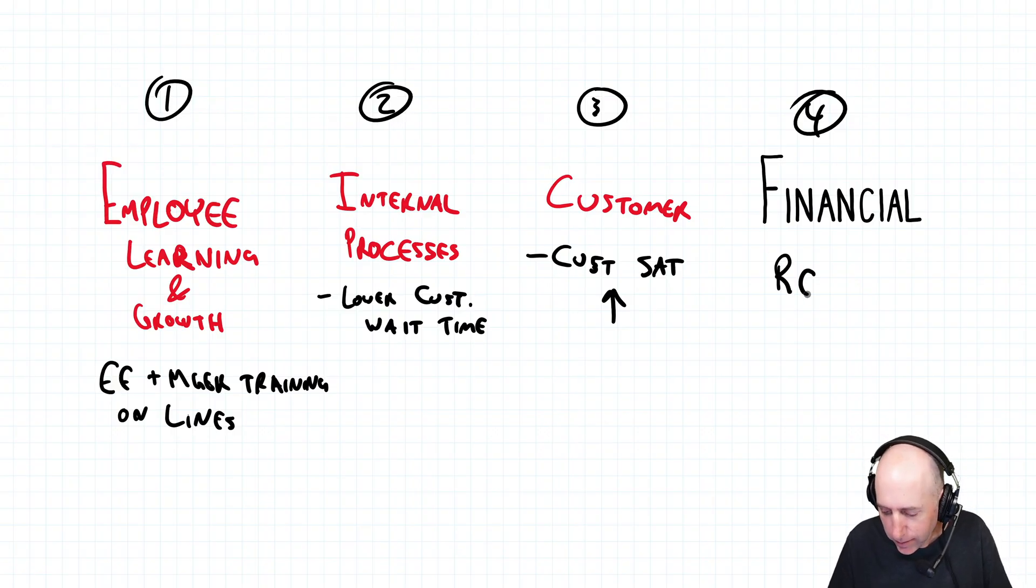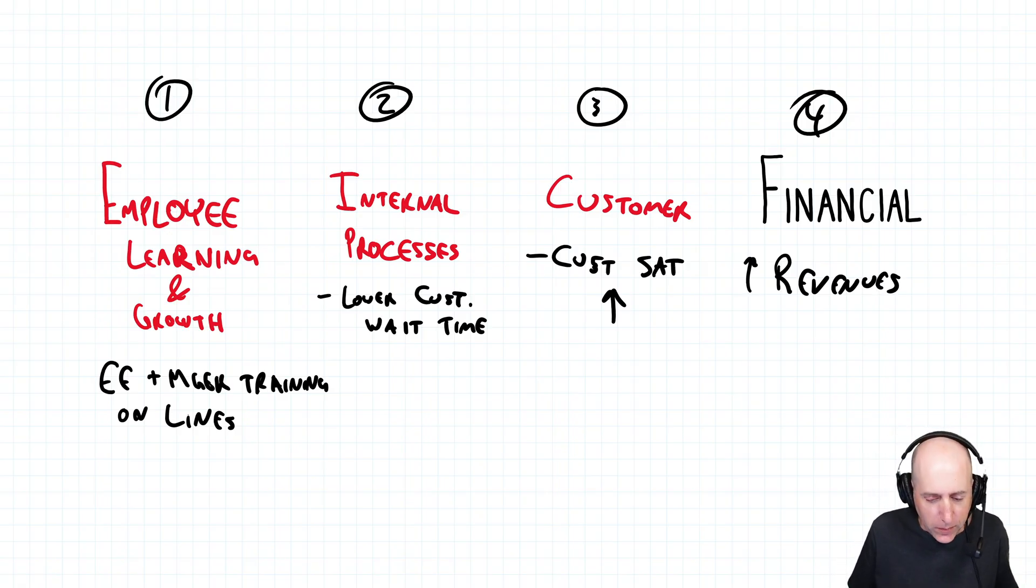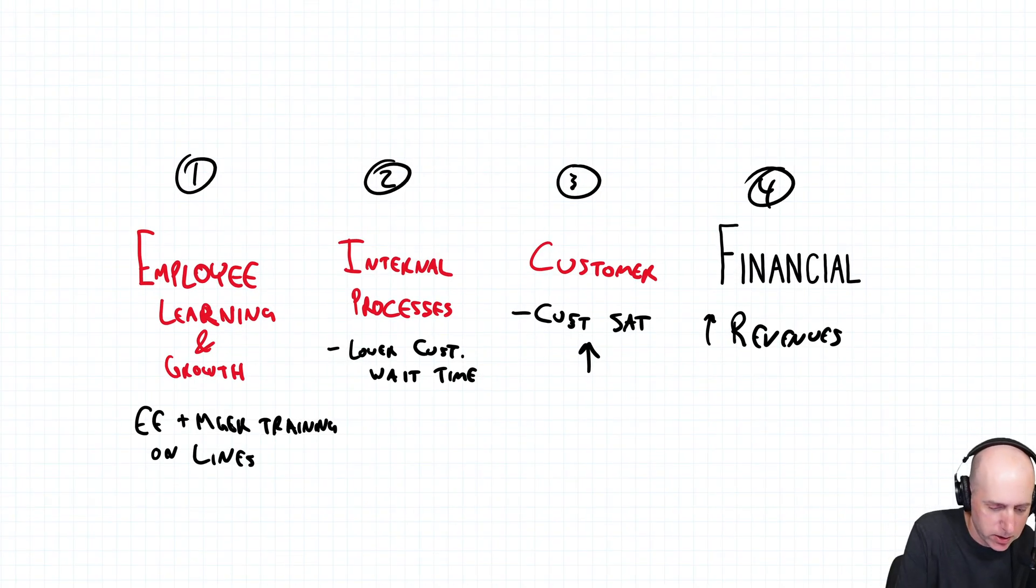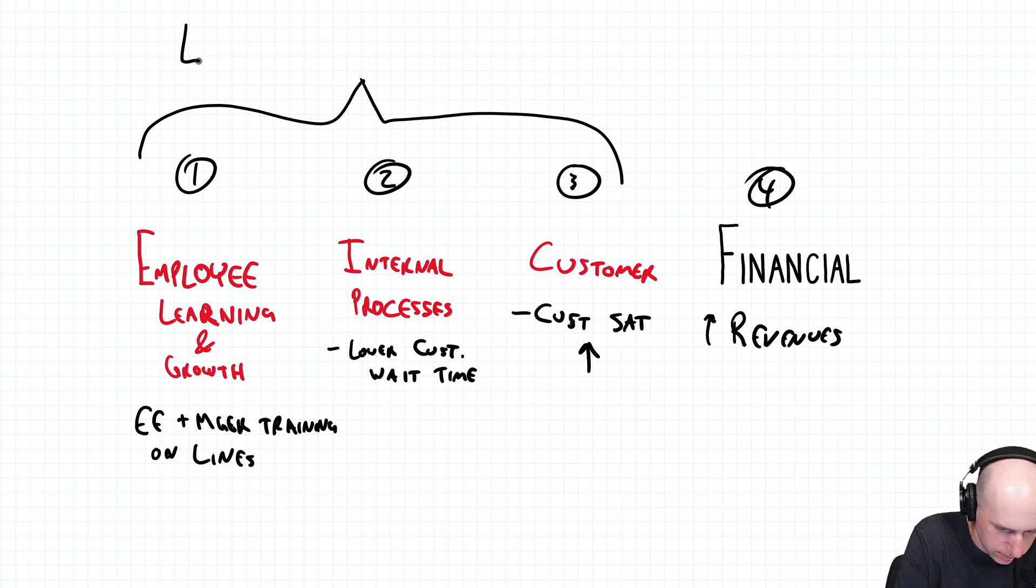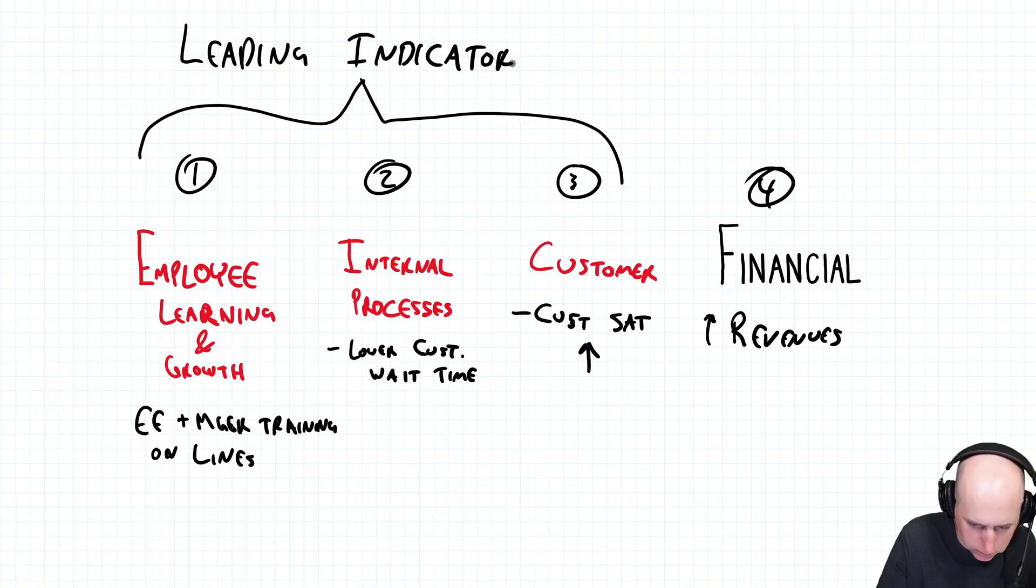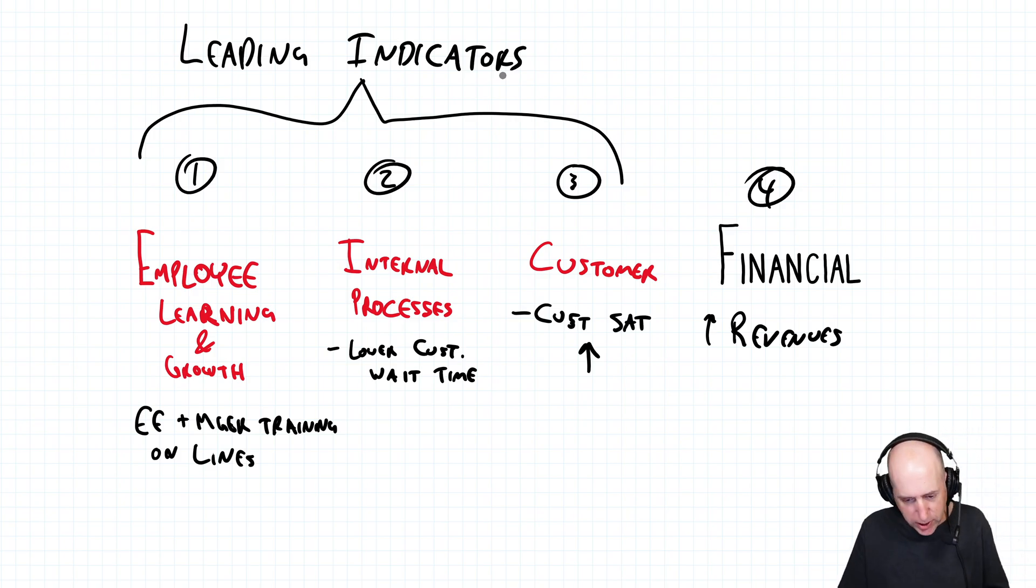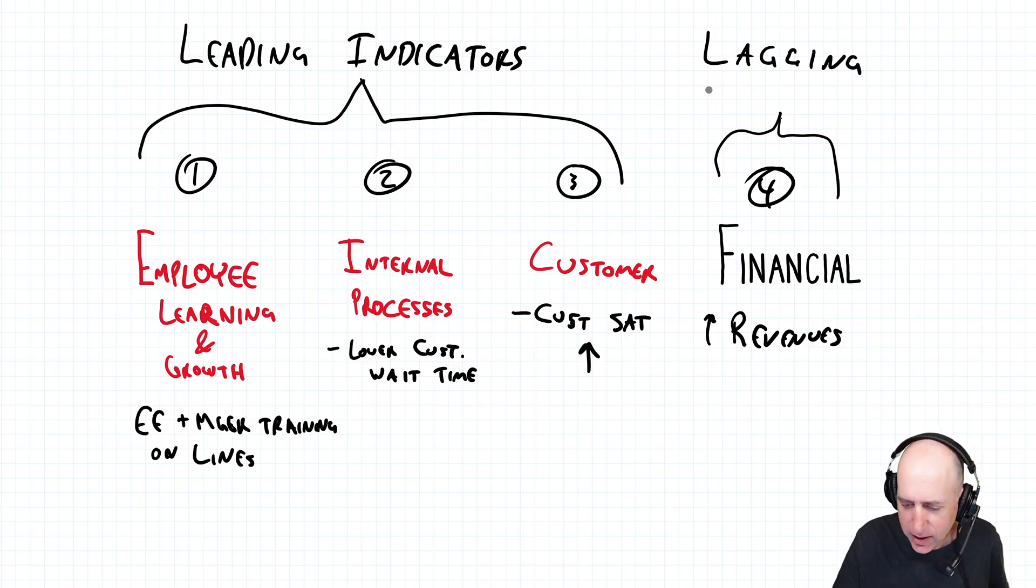Well, what's going to happen? And then hopefully revenues, share price, profit go up. Now what the balanced scorecard is very smart to point out. These are leading indicators. What does that mean? It means you got to do one, two, and three before you can get four, which is a lagging indicator.